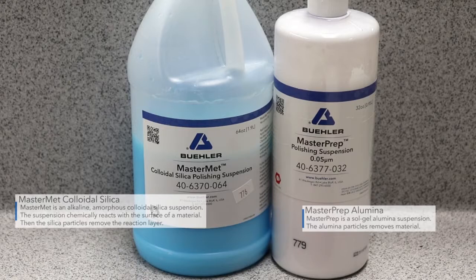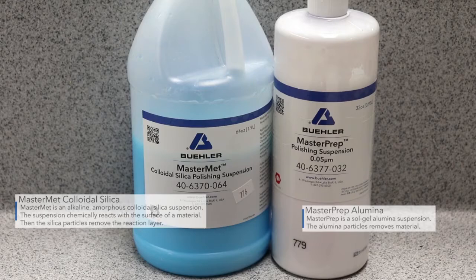The type of material being polished will determine which final polishing suspension is best. MasterMet is an alkaline amorphous colloidal silica suspension. The suspension chemically reacts to the surface of the sample and then silica particles remove the reaction layer. MasterPrep is a sol-gel alumina suspension. The alumina particles mechanically remove material.